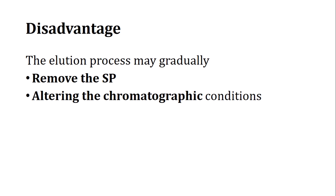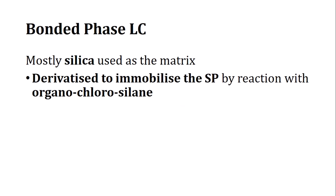In bonded phase liquid chromatography, silica is used as the matrix. Silica has good capacity to bind and is derivatized to immobilize the stationary phase by reaction with organochlorosilane. This modification allows the stationary phase to be permanently attached to the silica.